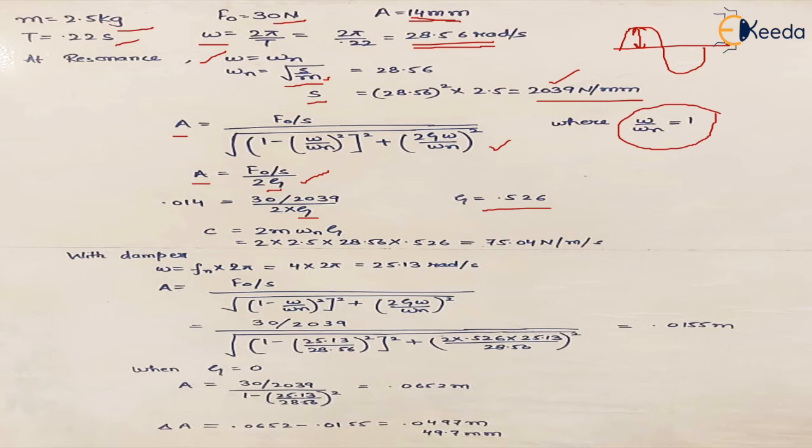And we know damping coefficient. So damping coefficient is given by this which is 2m omega n into zeta. So basically this comes from the formula where zeta is equal to c upon cc, right? Which is the critical damping factor, critical damping coefficient. So and its value is what? It is 2m omega n. So we know all the values, we place them and we get the value of damping coefficient which is 75.04 newton per meter per second.